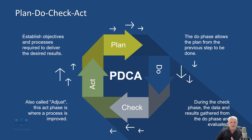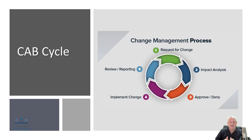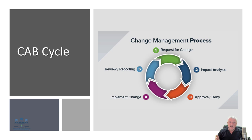Another important concept is the CAB — the Change Advisory Board. It's part of the change control process within an organization where a user submits a request for change, impact analysis is performed across all systems, the change is approved or denied, implemented, then reviewed and reported. An important part of this change management process is backup procedures to ensure that if things go wrong, you can revert to the previous state.